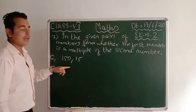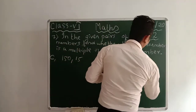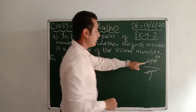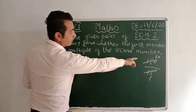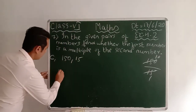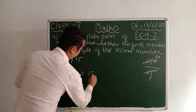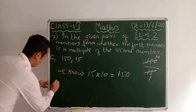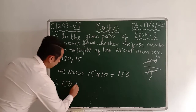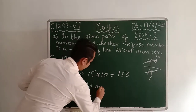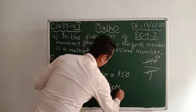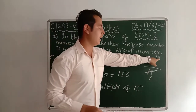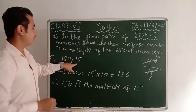Question c: 150 and 15. When you divide 150 by 15 you get 10. So we write: we know 15 × 10 = 150, therefore 150 is the multiple of 15.